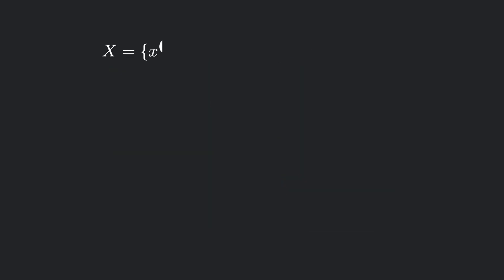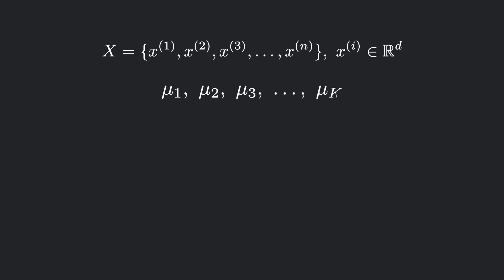Now let's formulate k-means mathematically. Suppose we have a dataset x in a general d-dimensional space and we initialize k centroids, meaning we want to form k clusters. We will discuss later how to choose the value of k, but for now assume it is given. Think of both the data points and the centroids as vectors in d-dimensional space.